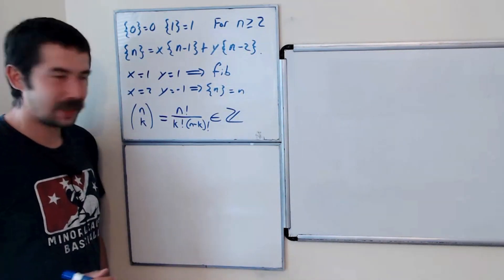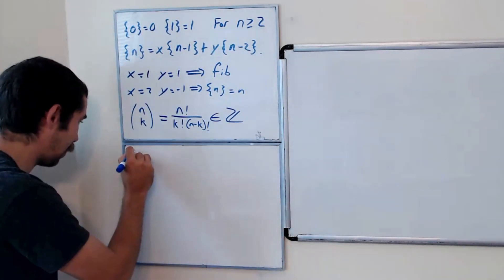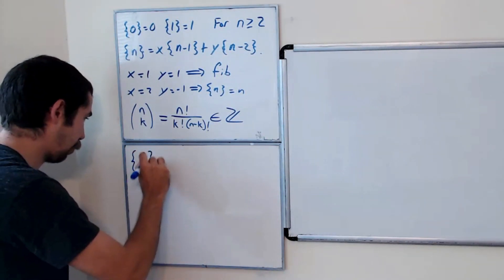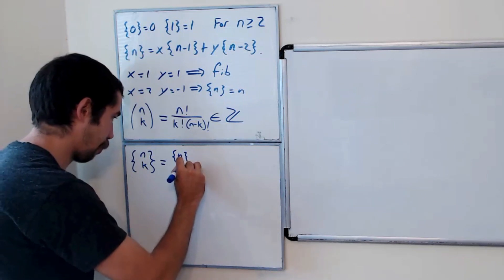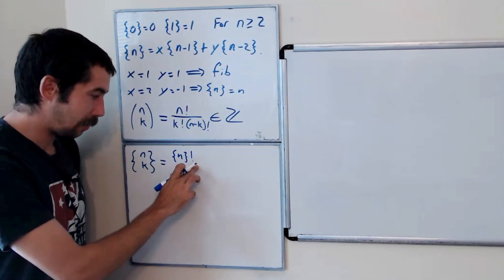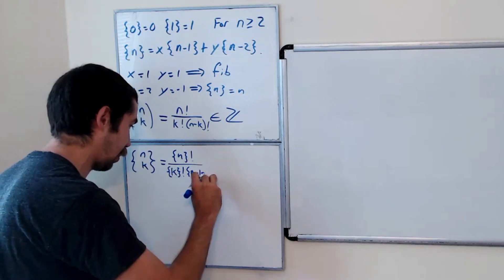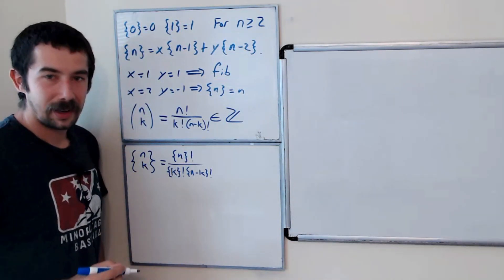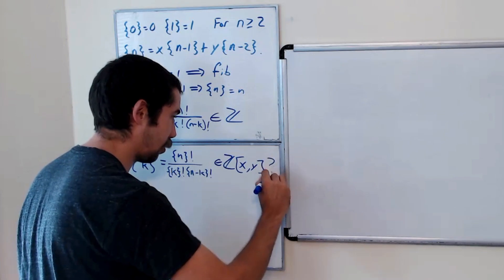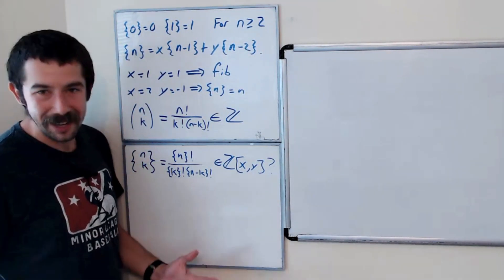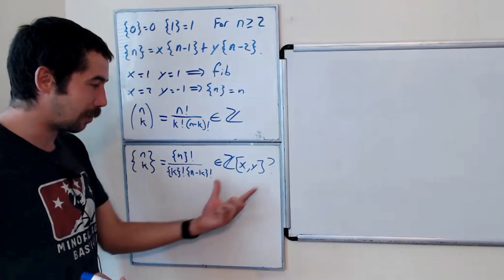What we're going to look at today is not the binomial coefficient, but the Lucas binomials — curly bracket n choose k. This is going to equal curly bracket n factorial over curly bracket k factorial times curly bracket n minus k factorial. We're going to check that this is not just an integer, but a polynomial in x and y with integer coefficients. It would be crazy if it is — and it is. We're going to give a sketch of a proof today.